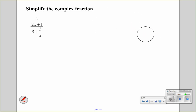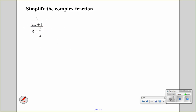So if we look at this complex fraction, we have two denominators: 2x plus 1 and x. So what we need to do is multiply by those to get rid of those fractions. To get rid of the fraction on the top, we have to multiply by 2x plus 1.